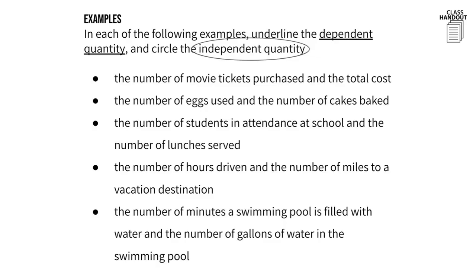For each of these examples, we're going to underline the dependent quantity and circle the independent quantity. The first one is the number of movie tickets purchased and the total cost. The total cost depends on the number of movie tickets purchased, which means the total cost is the dependent quantity and the number of movie tickets purchased is the independent quantity — because you're purchasing the tickets before you get the total cost.